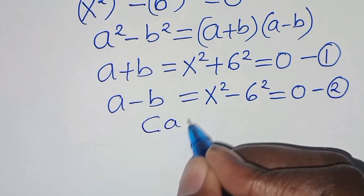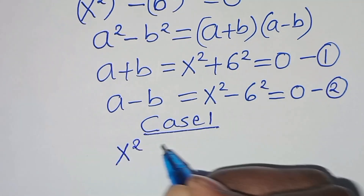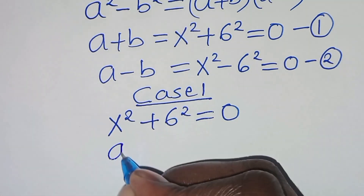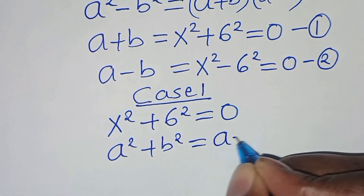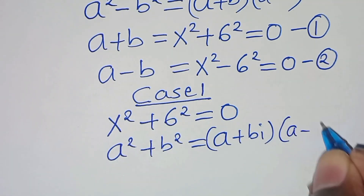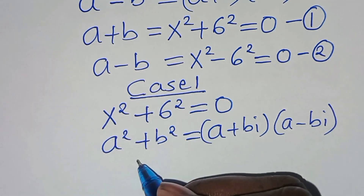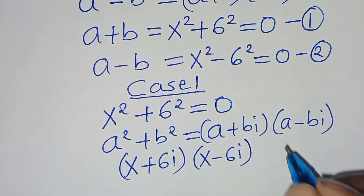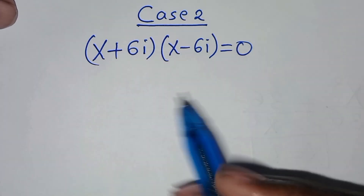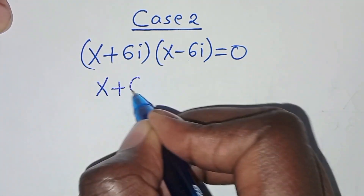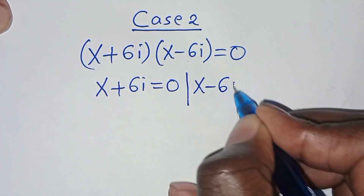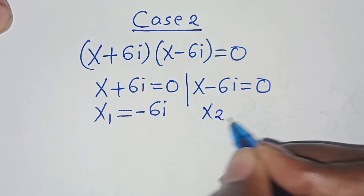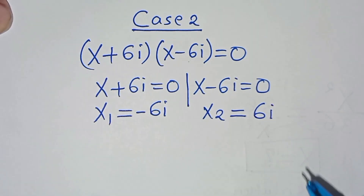For Case 1: x squared plus 6 squared equals 0. This is in the form a squared plus b squared, which factors as (a plus bi)(a minus bi). So x squared plus 6 squared equals (x plus 6i)(x minus 6i) equals 0. This gives x plus 6i equals 0, so x₁ equals minus 6i, and x minus 6i equals 0, so x₂ equals 6i.